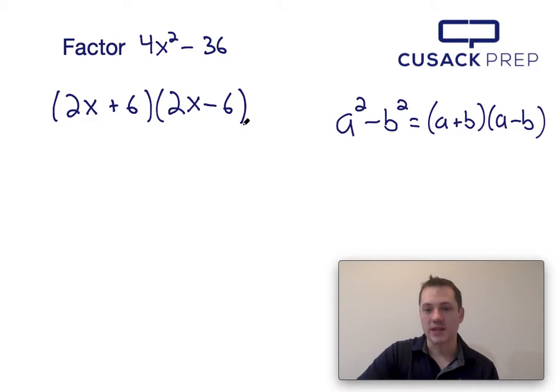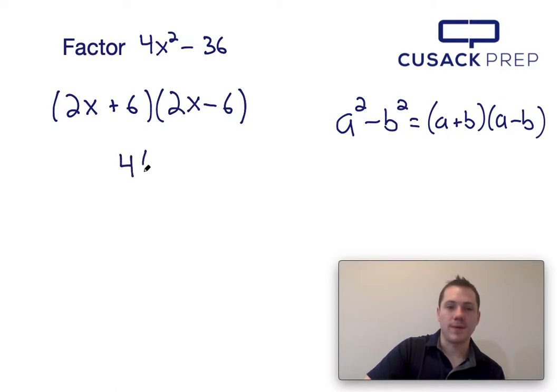Now you might say that's not totally factored, and that's true - you can take out a greatest common factor for both of these terms. However, it's easier if we do that from the very beginning. So what I'm going to do is take a 4 out, and I would have 4 times x squared minus 9.